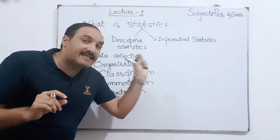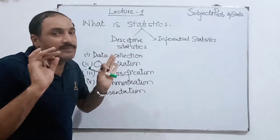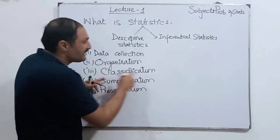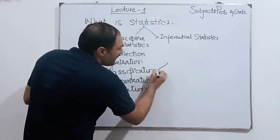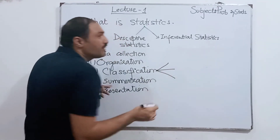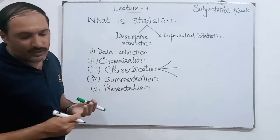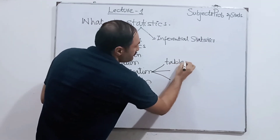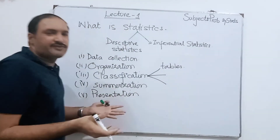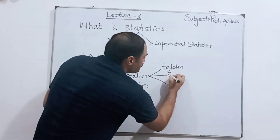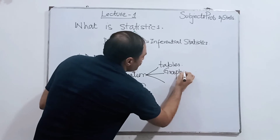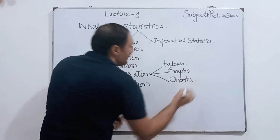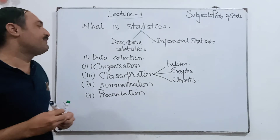Now I will tell you about the difference between statistics and descriptive statistics. Just one difference: what do we do in classification? In classification, we have tables, graphs, and charts. This is descriptive statistics.